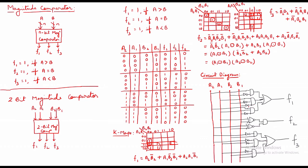Now, depending on the equations, I have designed the circuit. To keep the circuit neat, I have taken A2, A1, B2, B1 as straight lines, similar to a multiplexer layout. For F1, you can see A2 and B2-bar are fed to an AND gate, then A1, B2-bar, and B1-bar are AND-ed, then A2, A1, and B1-bar are AND-ed; all are OR-ed together to give F1. Similarly, I have designed the circuits for F2 and F3 based on the simplified Boolean equations, giving the complete 2-bit magnitude comparator circuit.